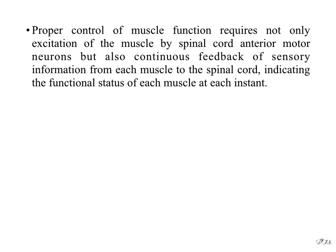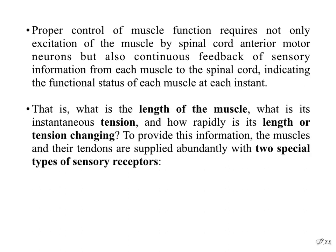Proper control of muscle function requires not only excitation of the muscle by spinal cord anterior motor neurons, but also continuous feedback of sensory information from each muscle to the spinal cord, indicating the functional status of each muscle at each instant — that is, what is the length of the muscle, what is its instantaneous tension, and how rapidly is its length or tension changing?